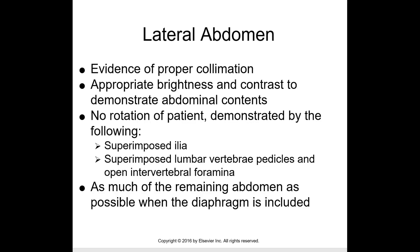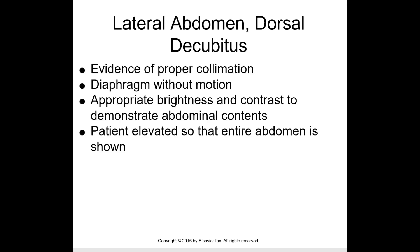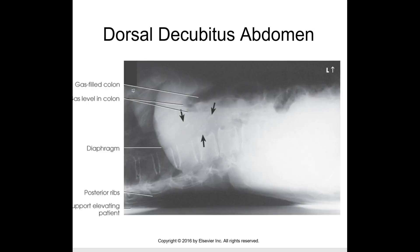For the lateral abdomen, evidence of proper collimation with appropriate brightness and contrast should demonstrate abdominal contents. No rotation of the patient is demonstrated by superimposed ilia, superimposed lumbar vertebral pedicles, and open vertebral foramina. As much of the remaining abdomen as possible should be included when the diaphragm is included. For the lateral abdomen dorsal decubitus, the patient should be elevated so the entire abdomen is shown — make sure a pad is placed underneath, otherwise you'll cut off part of the image. The patient is laying down with the left marker with the arrow up.